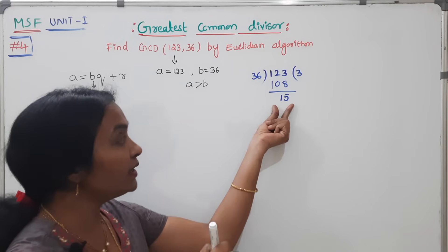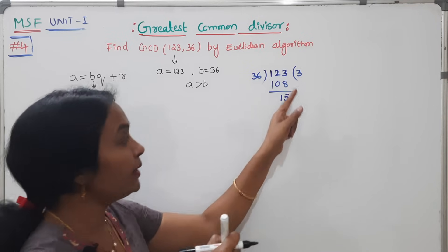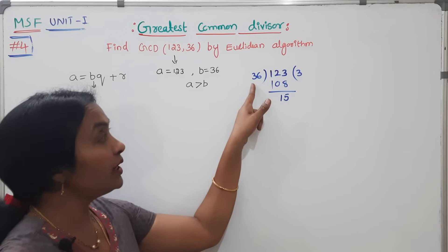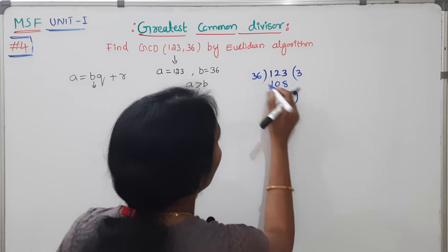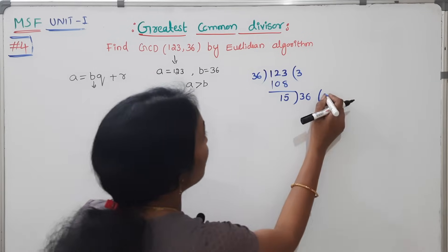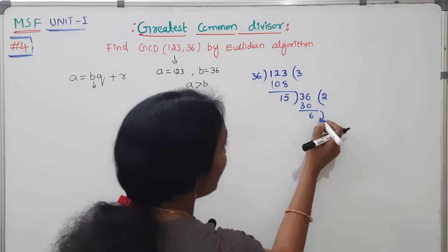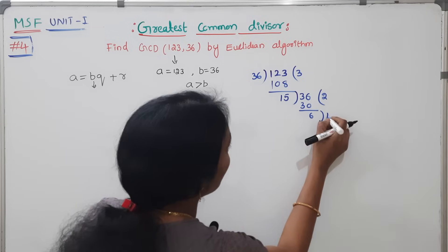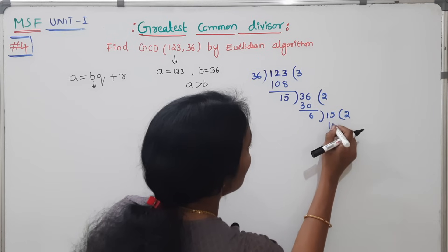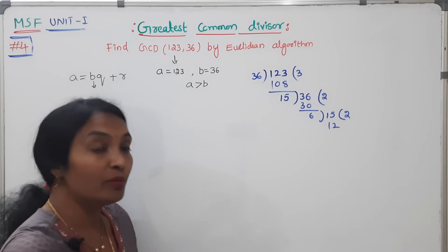Now what do we do? This is the divisor, dividend and quotient. If you have the remainder, we are going to divide again. 36, I will divide the remainder. 15 times 2 is 30. Remainder is 6. Again I will divide the remainder. 15 divided: 6 times 2 is 12, remainder 3. We keep dividing the remainder till the remainder becomes 0.